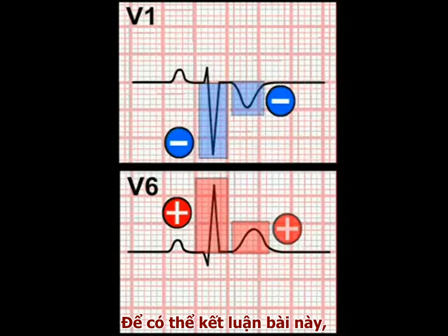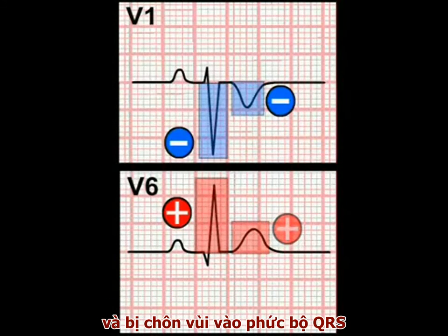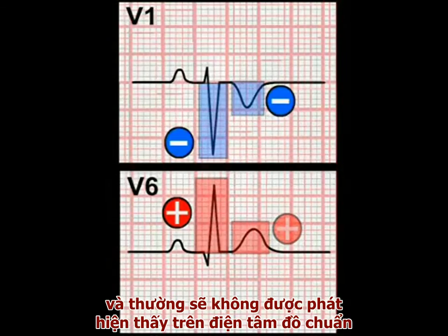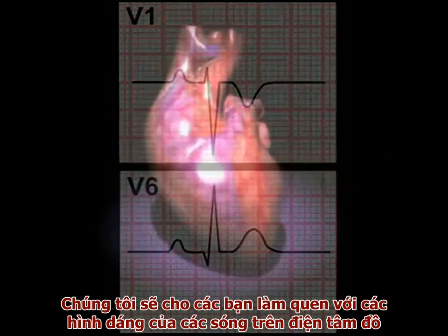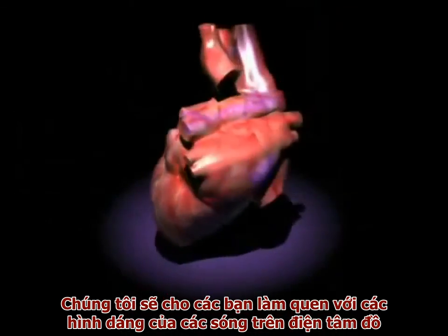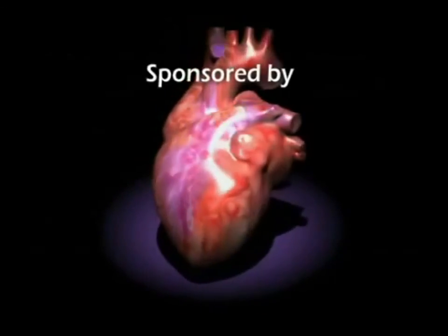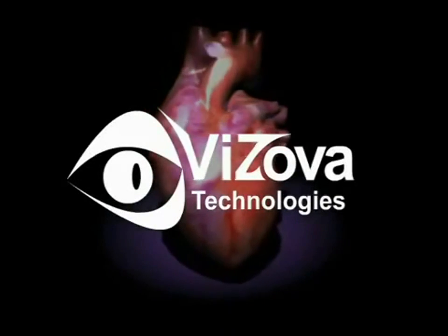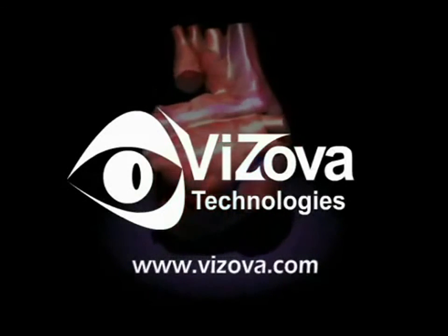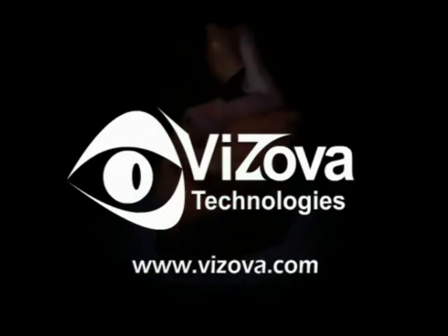Just to tie up a loose end, atrial repolarisation produces a relatively weak electrical signal which is buried in the QRS complex and is generally not detectable on a standard 12-lead ECG. In the next video, we will try and ensure that you are familiar with the nomenclature of the ECG recording. We'll see you next time.